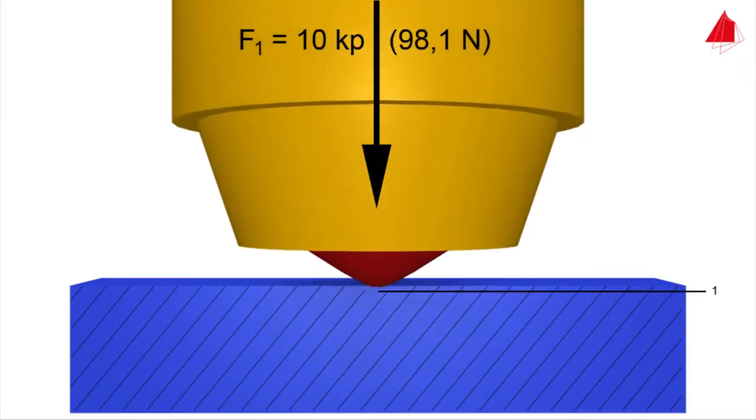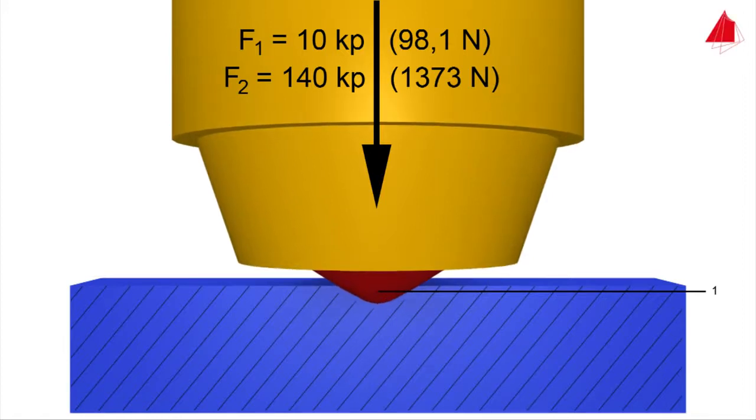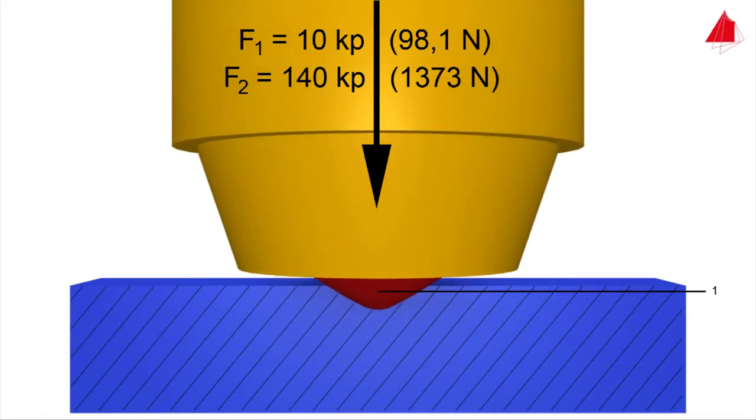In step 2, the test force is increased by 140 kiloponds, which is acting as the major force. This means that an overall force of 150 kiloponds is now acting on the indenter, and this force is held for a certain time.